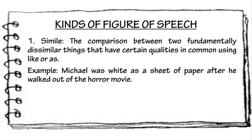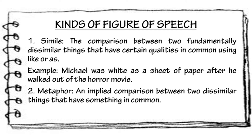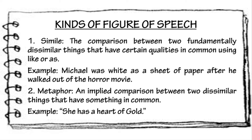Next, we have the metaphor. Metaphor is an implied comparison between two dissimilar things that have something in common. Metaphor is used to describe an object or action in a way that is not literally true. Example: She has a heart of gold. In the example, we compare a heart to gold, which are two dissimilar things.